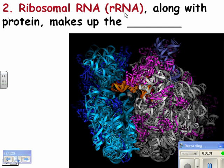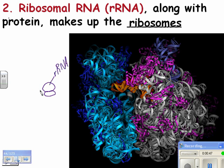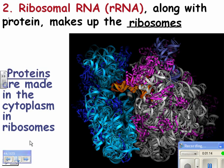The next type is ribosomal RNA, shortened to rRNA. This is a structural thing — along with protein, it makes up the ribosomes. The actual physical place where proteins are made is made out of ribosomal RNA. The strand of RNA that codes for a protein is called messenger RNA, and the physical structure of the ribosome is made out of ribosomal RNA plus some proteins.